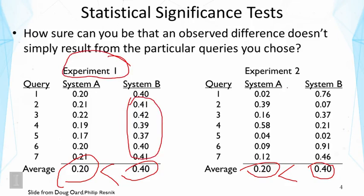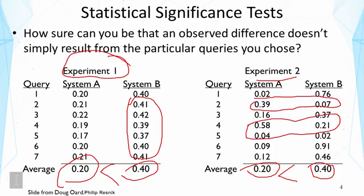Whereas in Experiment 2, we're not sure, because looking at some individual results, System A is actually better in some cases. But yet, if we look at only the average, System B is better. So how reliable is our conclusion if we only look at the average? In this case, intuitively we feel Experiment 1 is more reliable. But how can we quantitatively answer this question? This is why we need to do a statistical significance test.